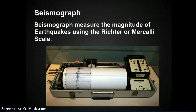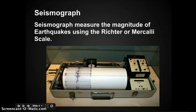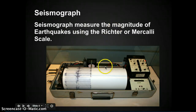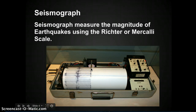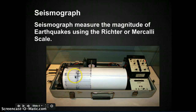How do we know how strong an earthquake is? How do we know the magnitude? We use machines called seismographs. Here's a picture of one. Seismographs measure the magnitude of earthquakes. This needle has a little pencil attached. If it moves, there's an earthquake happening. When it moves a lot, there's a strong earthquake. When it moves a little, it's a small earthquake.